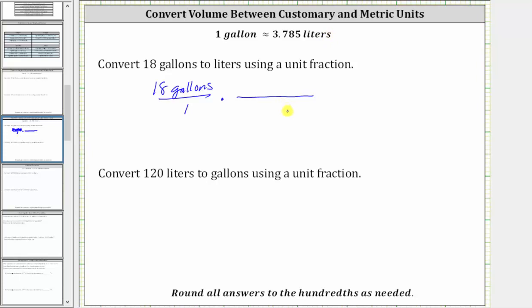Because we want the units of gallons to simplify out, and right now we have gallons in the numerator, for the unit fraction, the gallons must be in the denominator and liters must be in the numerator. Since one gallon is approximately 3.785 liters, the unit fraction is 3.785 liters over one gallon.